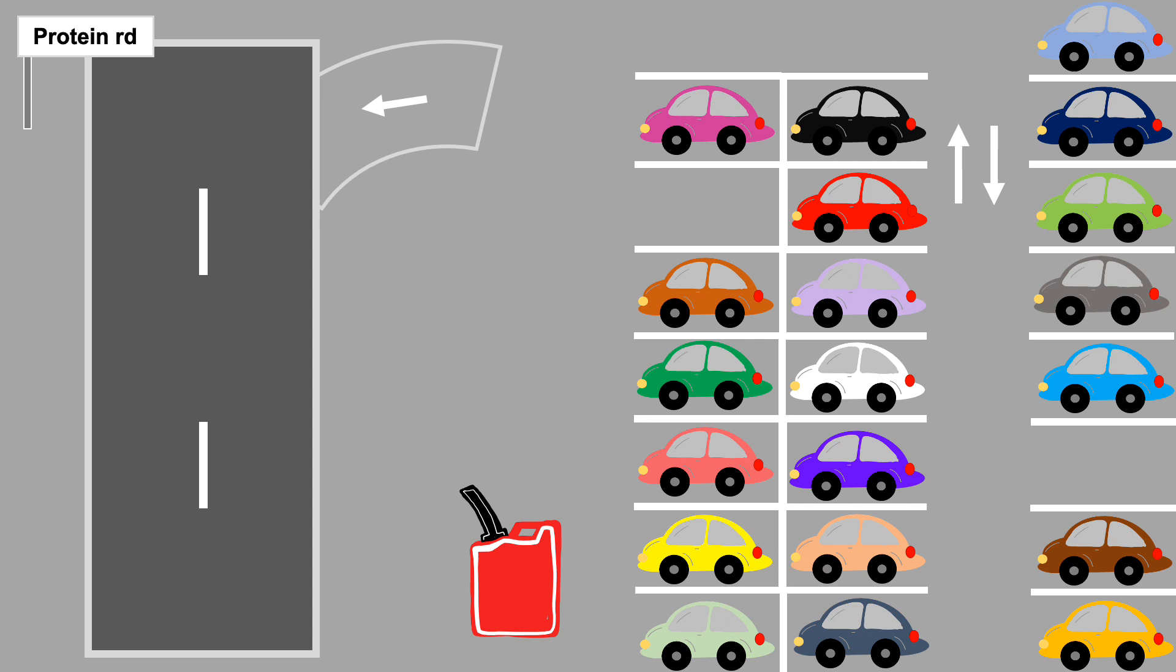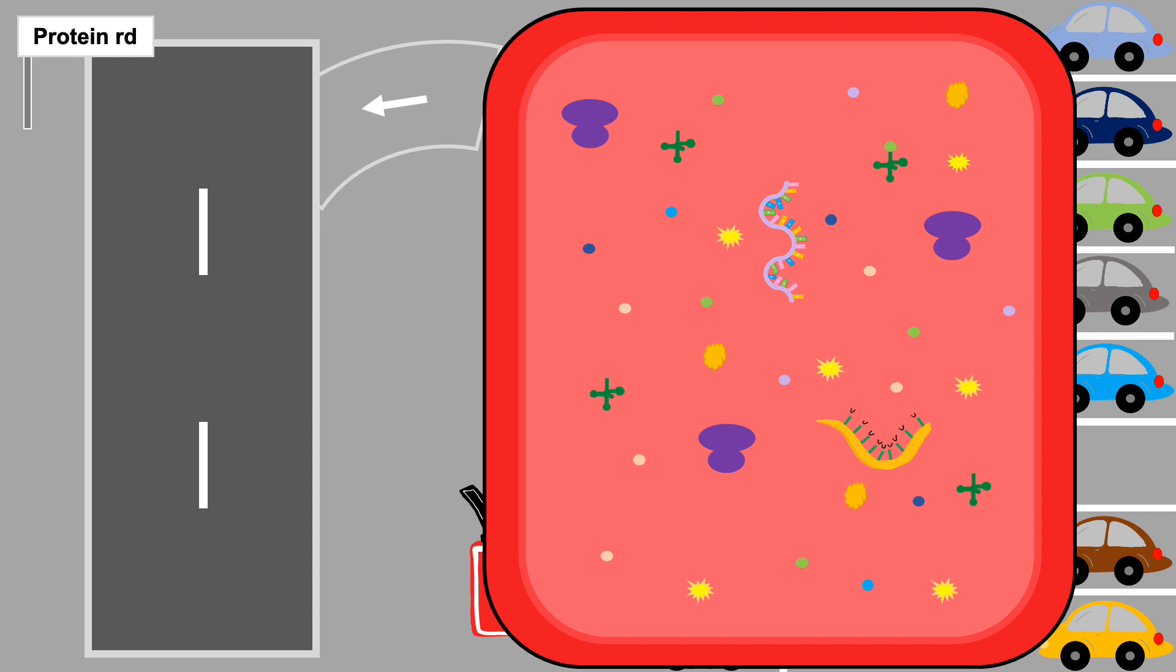Imagine there are 20 different types of cars in a parking lot, each representing an amino acid. Each car requires a certain combination of components in its fuel to successfully function and drive to work—in other words, to incorporate into the protein.